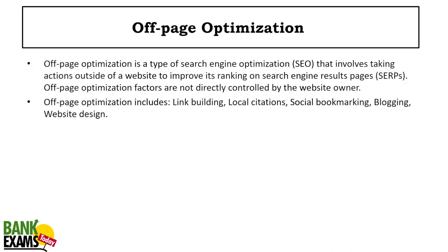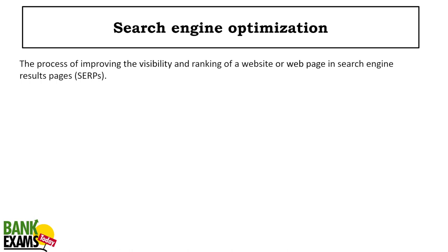On-page optimization means making changes on your own website to make it fast, reliable, and informative. Off-page optimization means getting links from external sources — like a local newspaper, social bookmarking, or a blogger mentioning you — without making changes on your website itself. Both on-page and off-page optimization help you get more organic clicks from Google.